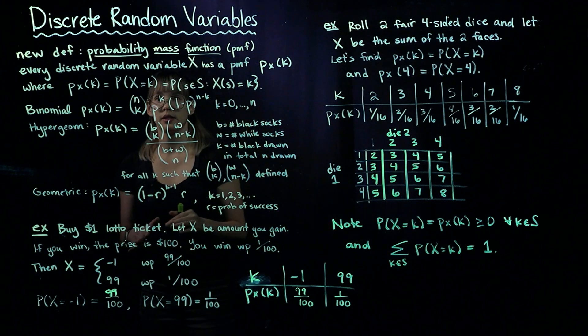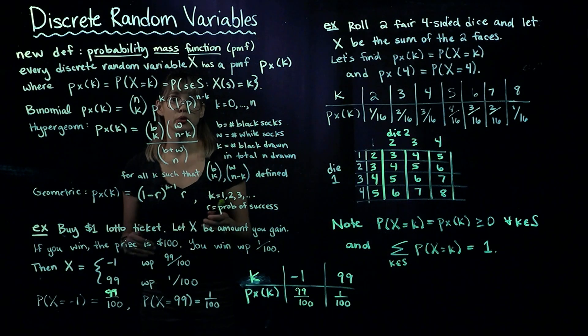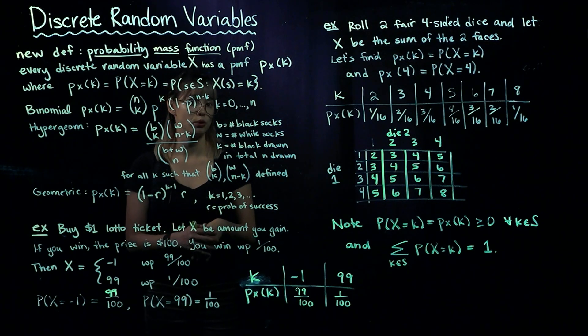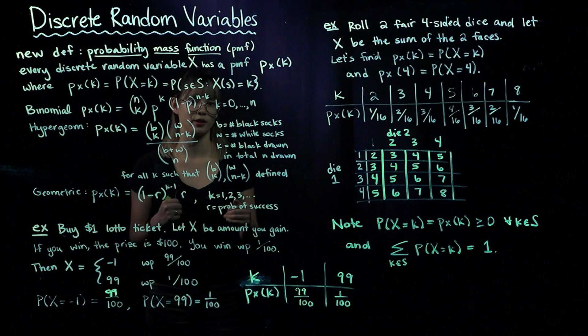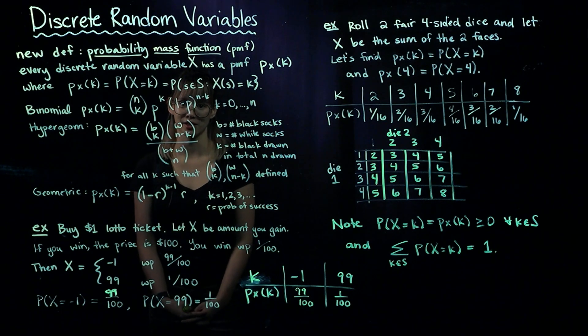We've learned more about discrete random variables—how to describe the values they take on and the probabilities of those values using a probability mass function.